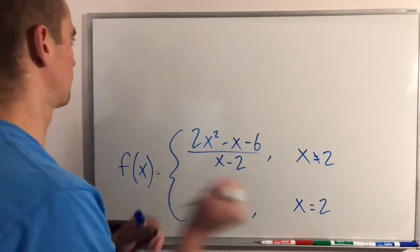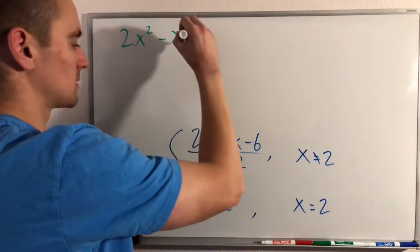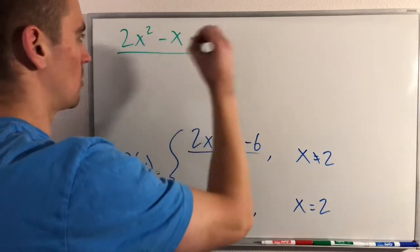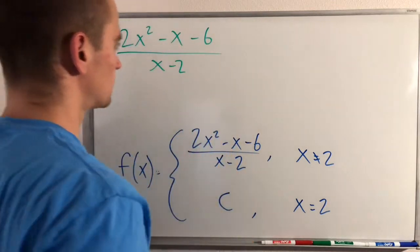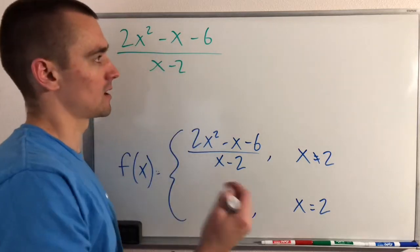So let's just take 2x squared minus x minus 6 over x minus 2. And what I want to think about is this numerator here, whether or not that can be factored out. In fact, it can.